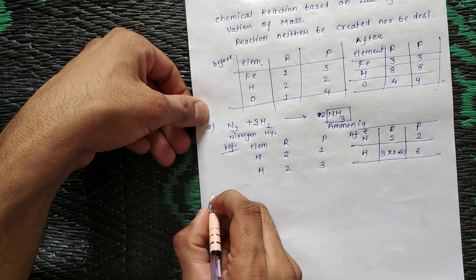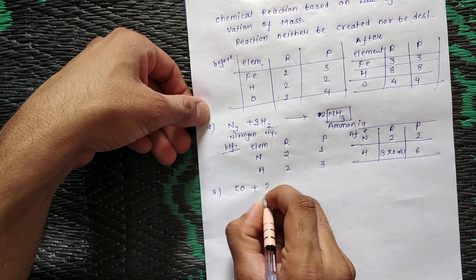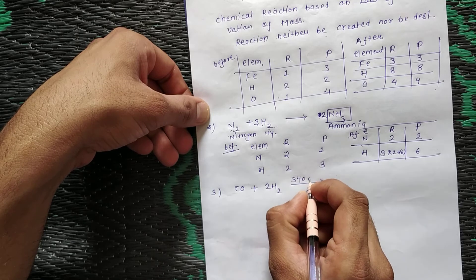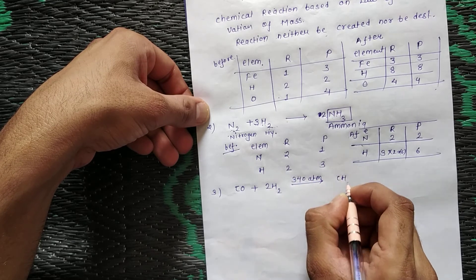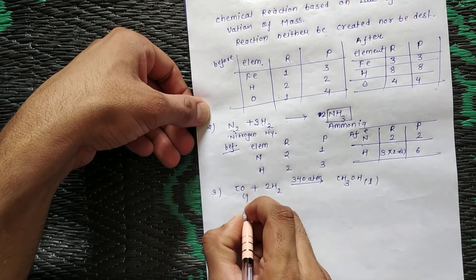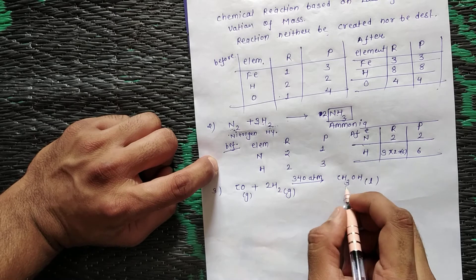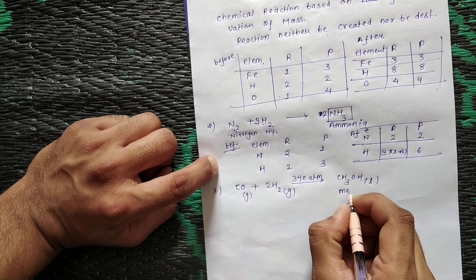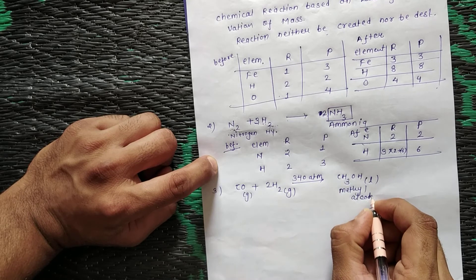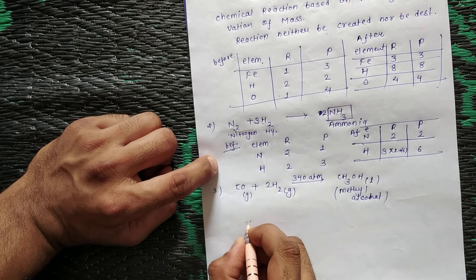Then again, CO carbon monoxide reacts with H2 in the presence of 340 atmospheric pressure and forms CH3OH, which is liquid. The reactants are in gaseous state and the product formed is in liquid state. CH3OH is called methyl alcohol or methanol.